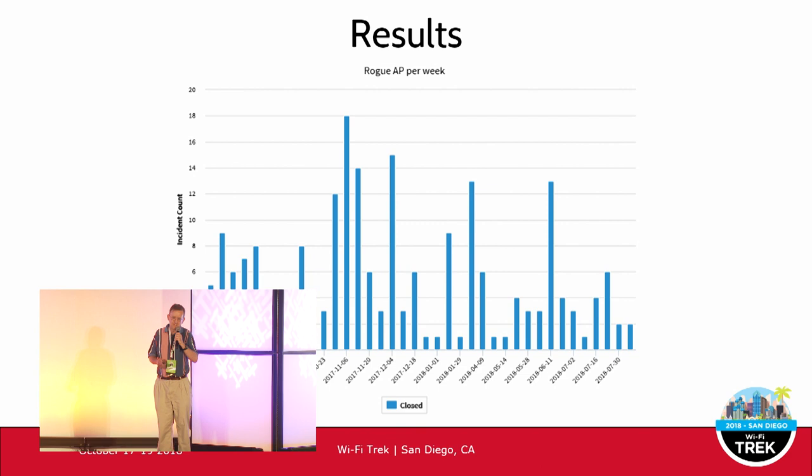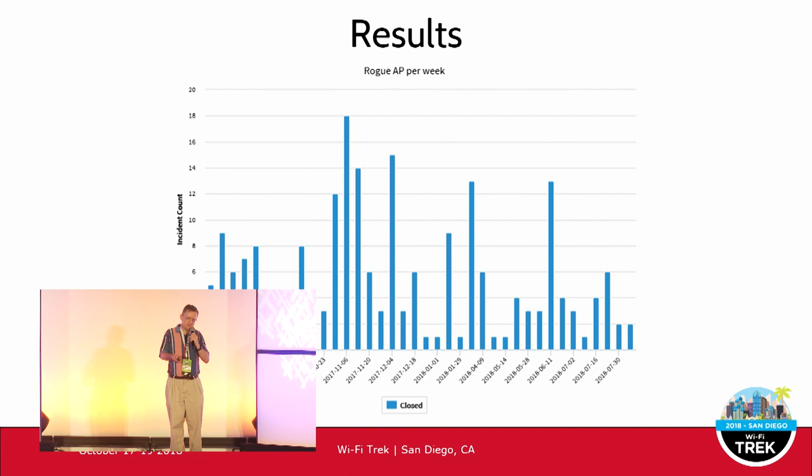Here are some results from our ticketing system. It looks a bit like a stock market chart, but you can see a downward trend — indicating fewer rogue incidents over time. Thank you, any questions?